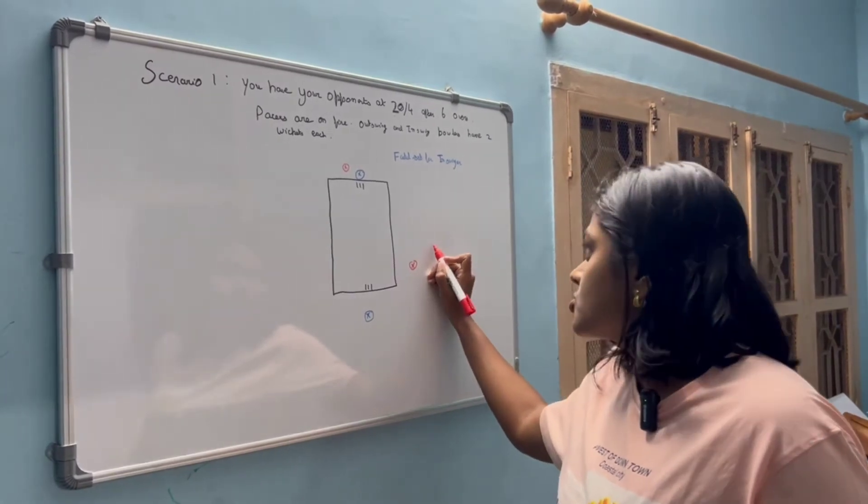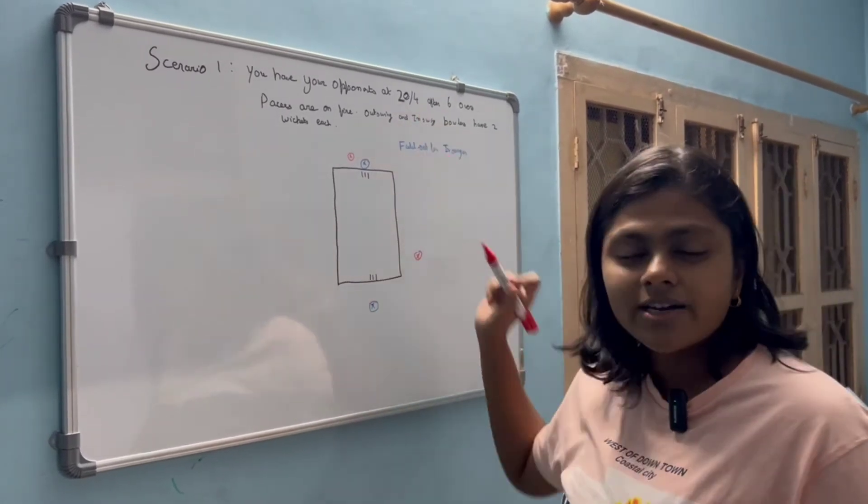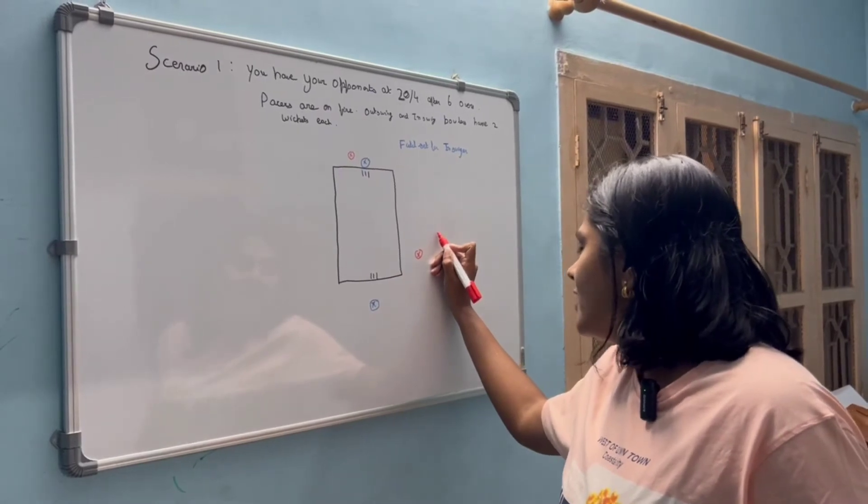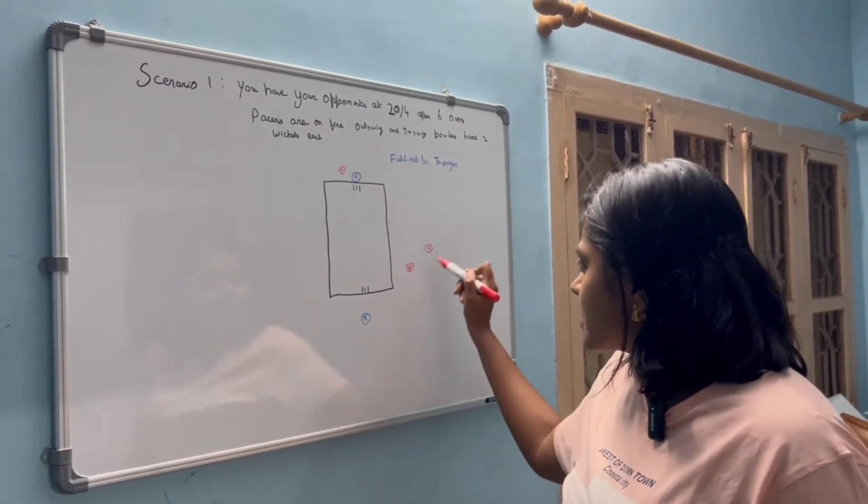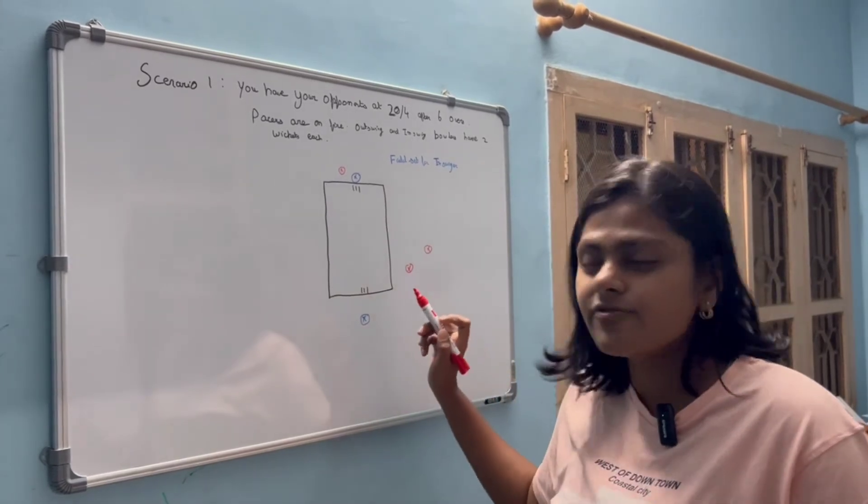And my third catching position with the opponents at 24-4 is that I will have a catching mid-wicket. The key is that these two catching positions will be in different angles.